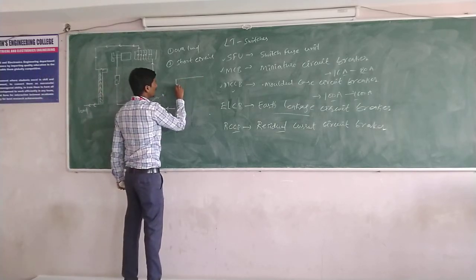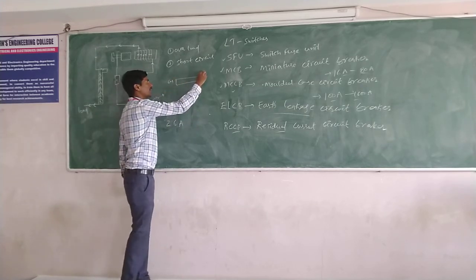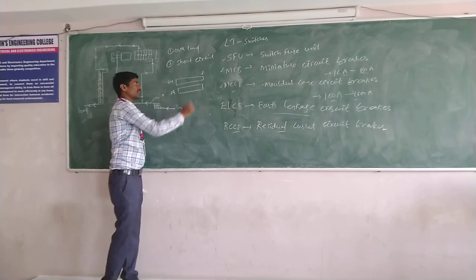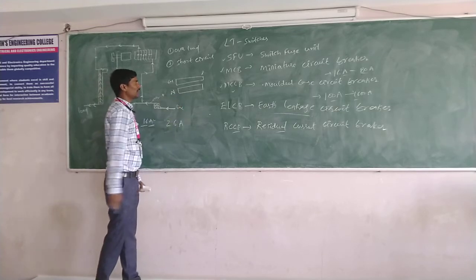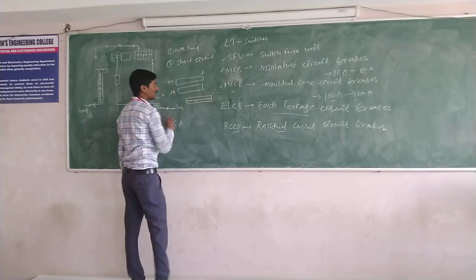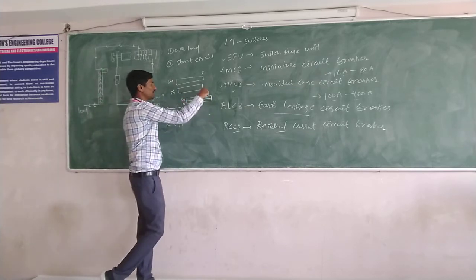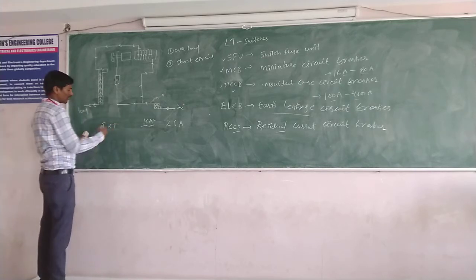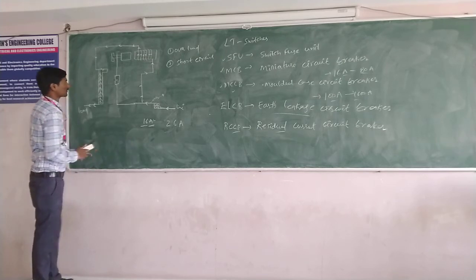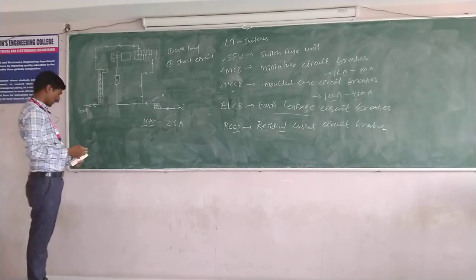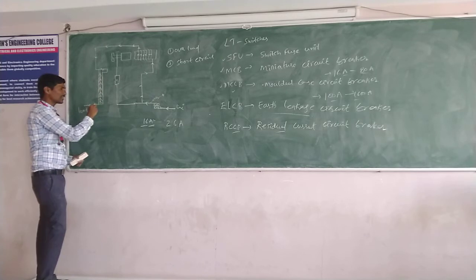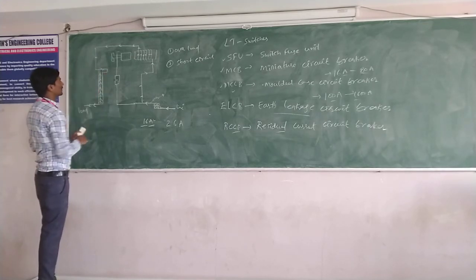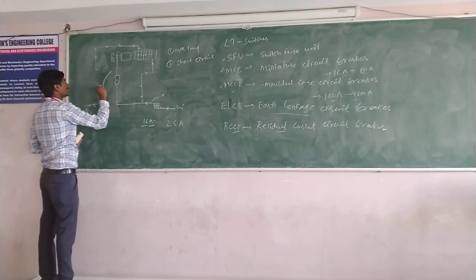The current also flows through the bimetallic strip. The function of the bimetallic strip is: if you take a single material and heat it, it will bend in one direction. But if you take two different materials — like copper and aluminum — and combine them, whenever you apply heat, one material expands more than the other, so it bends in one particular direction. We know that current is proportional to temperature, so whenever overload current flows through the bimetallic strip, it heats up and bends.